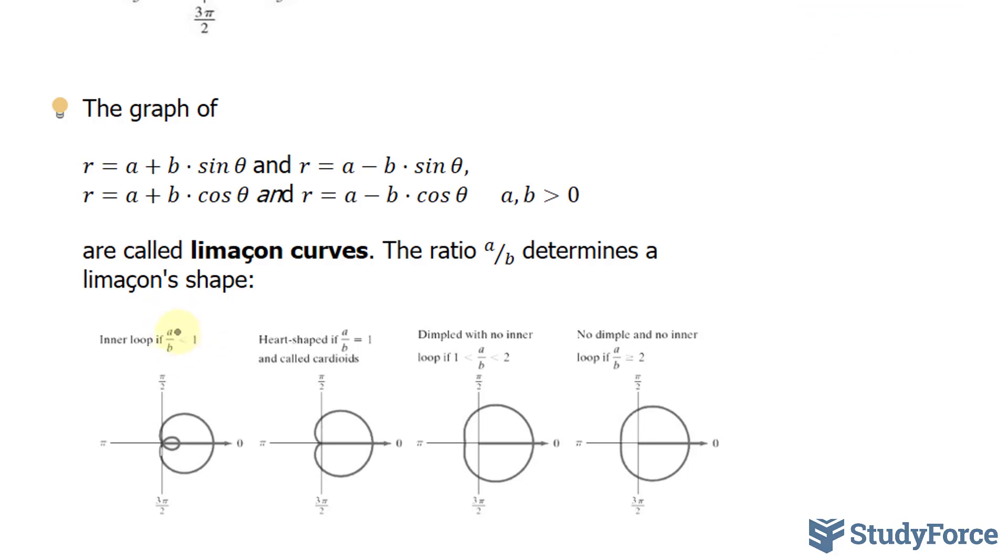Notice that if the ratio is less than 1, you'll have an inner loop. If the ratio is 1, which in our case it was, you'll have this heart shape, which is also called a cardioid. When it's between 1 and 2, you have a little dimple forming. And if it's greater than 2, you have no dimple and no inner loop.